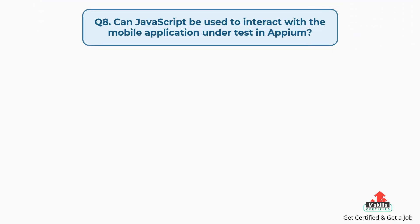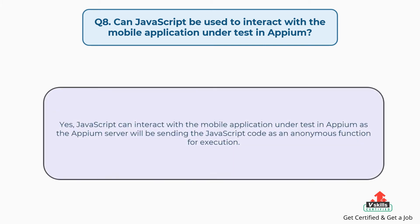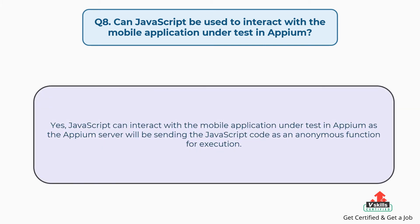Question number 8: Can JavaScript be used to interact with a mobile application under test in Appium? Yes, JavaScript can interact with the mobile application under test in Appium, as the Appium server will be sending the JavaScript code as an anonymous function for execution.